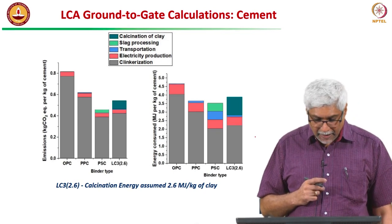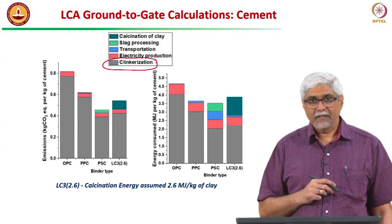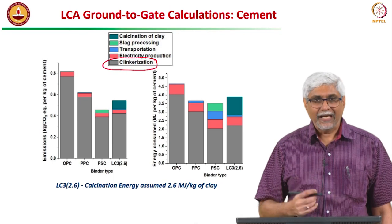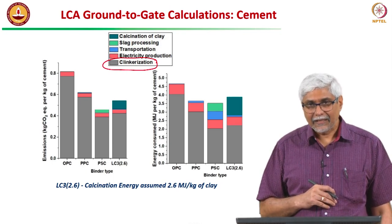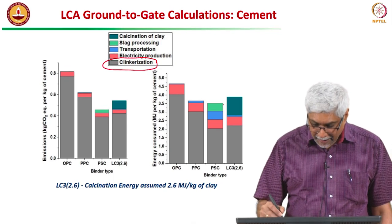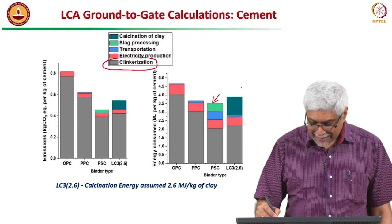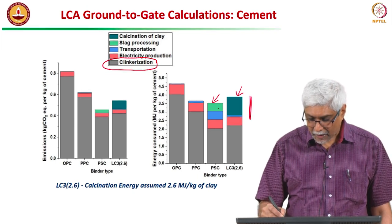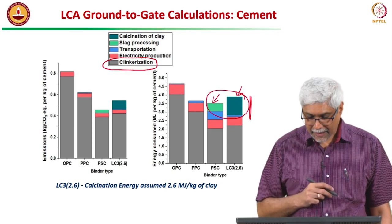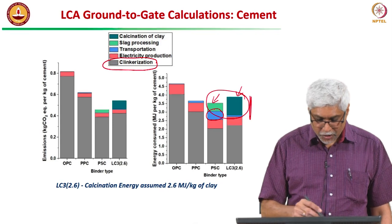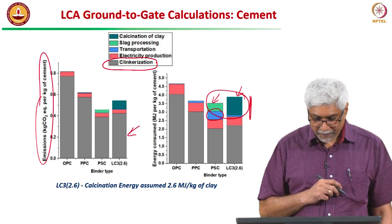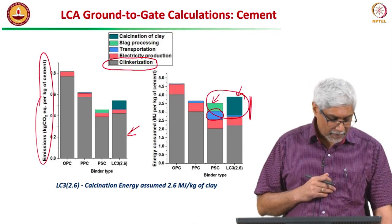In graphical form, the grey portion representing clinkerization energy and CO2 dominates all graphs, confirming clinkerization drives the sustainability impact of cement. As clinker content decreases, the bar comes down. For slag cement and LC3, there is some additional energy required for grinding slag and calcining clay, plus some transportation, but CO2 emissions are still dominated by the clinker portion. Less clinker is better in the cement, as the assessment clearly shows.